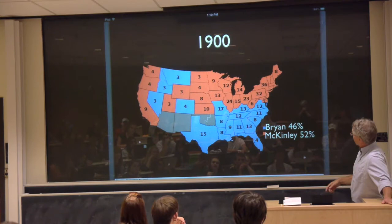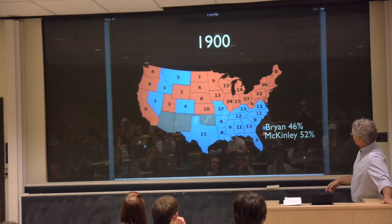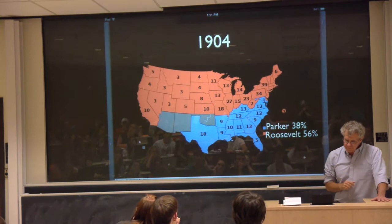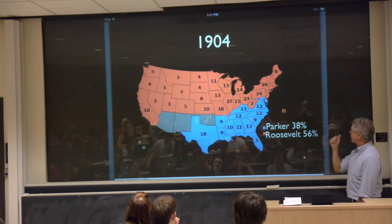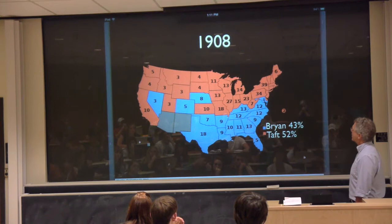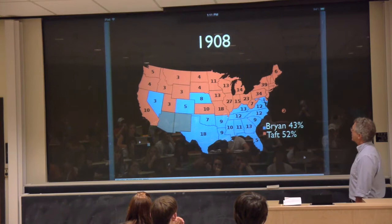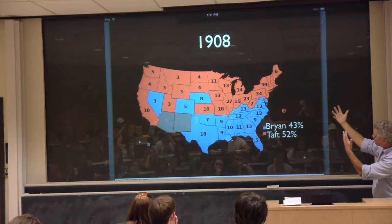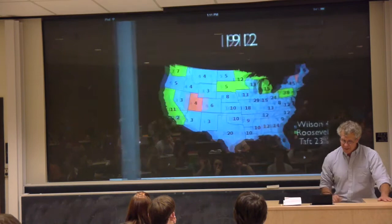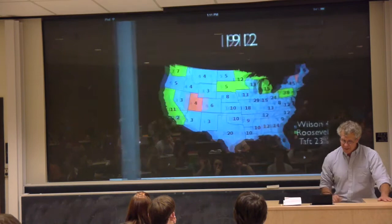Bryan ran for president three times and lost every time, though he won a lot of states and support. By 1904 with Teddy Roosevelt defeating Parker, the pattern looks more like a straight north-south divide. In 1908, Taft defeating Bryan again, you can see glimmerings of the L. In any event, you see the same overall kind of pattern persisting.